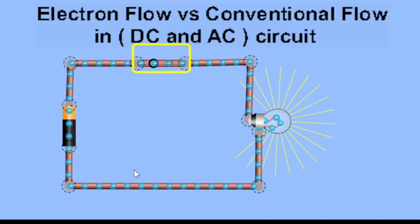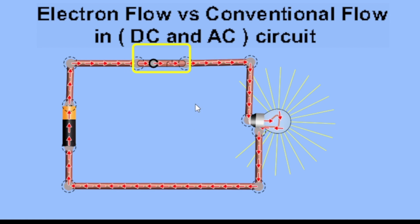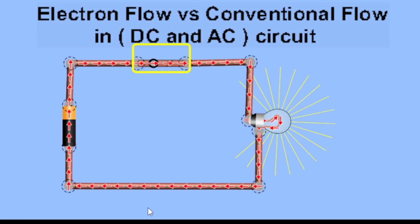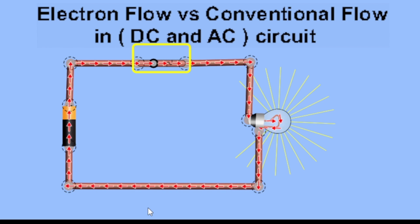How about the conventional flow in a DC circuit? As you can see, the conventional flow moves from positive, through the load, to negative. The current flow in conventional is considered to flow from the positive terminal of the voltage source — such as a generator or battery — to the negative terminal.